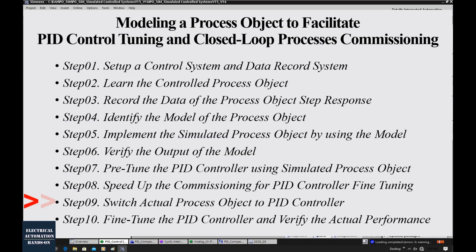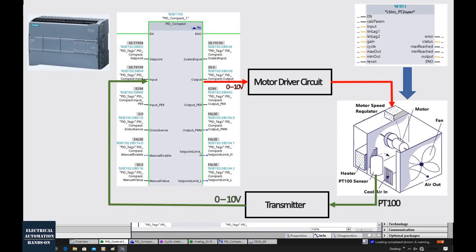Step 9: Switch the actual process object to PID controller. In this step, we will switch the process object from the transfer function simulated process object to our actual process object.